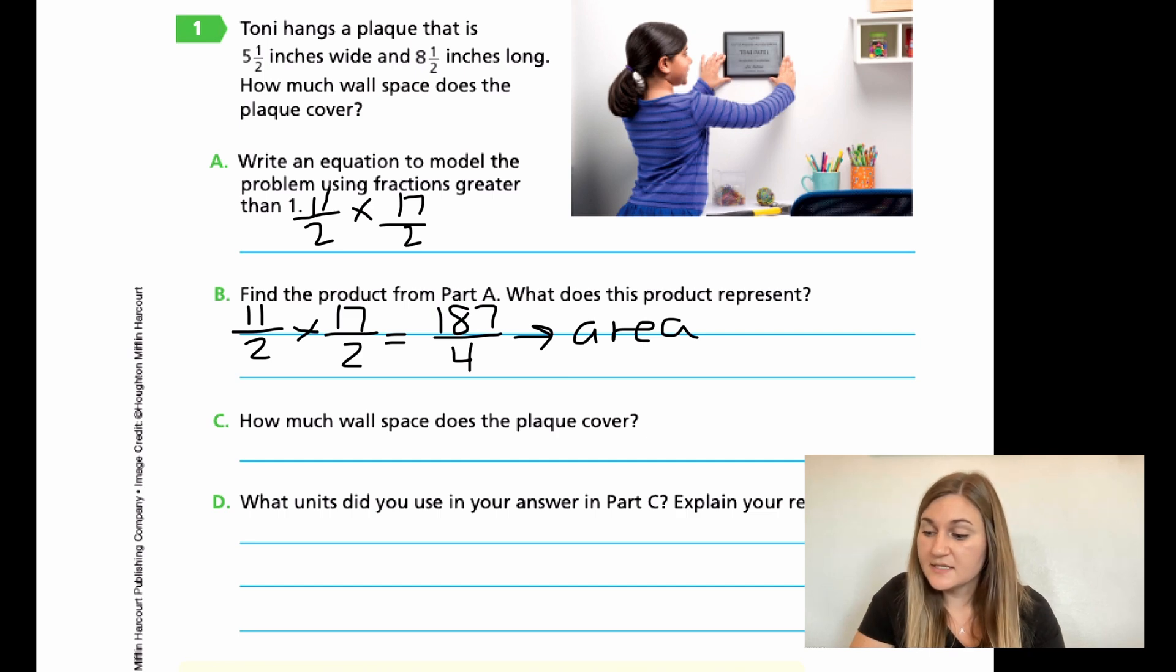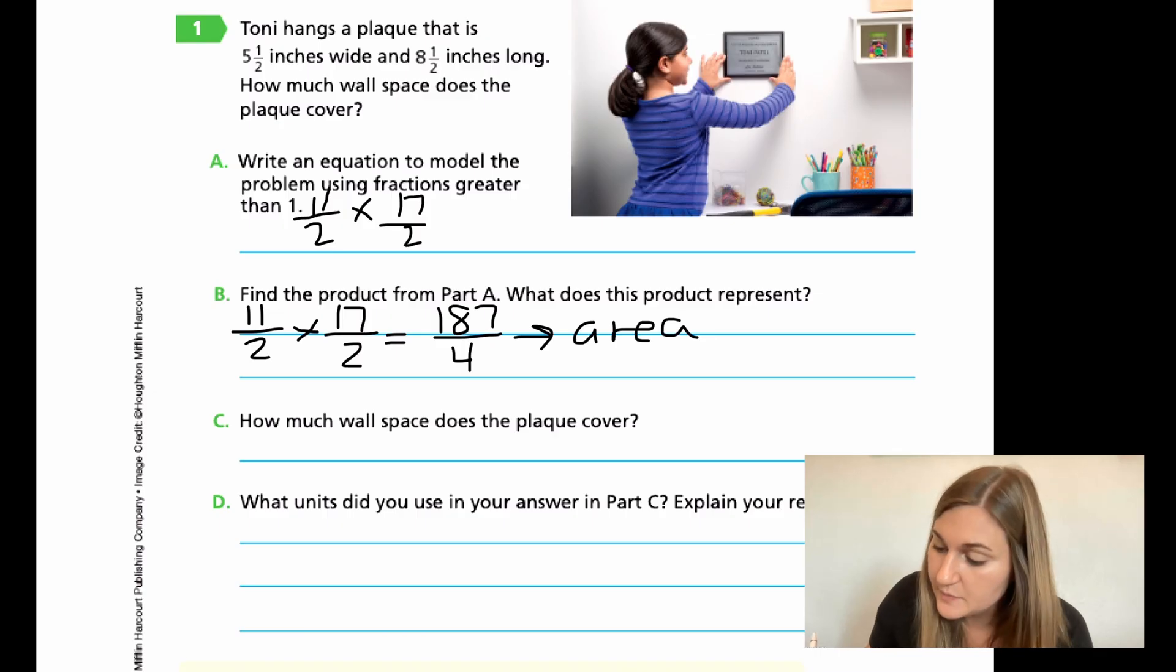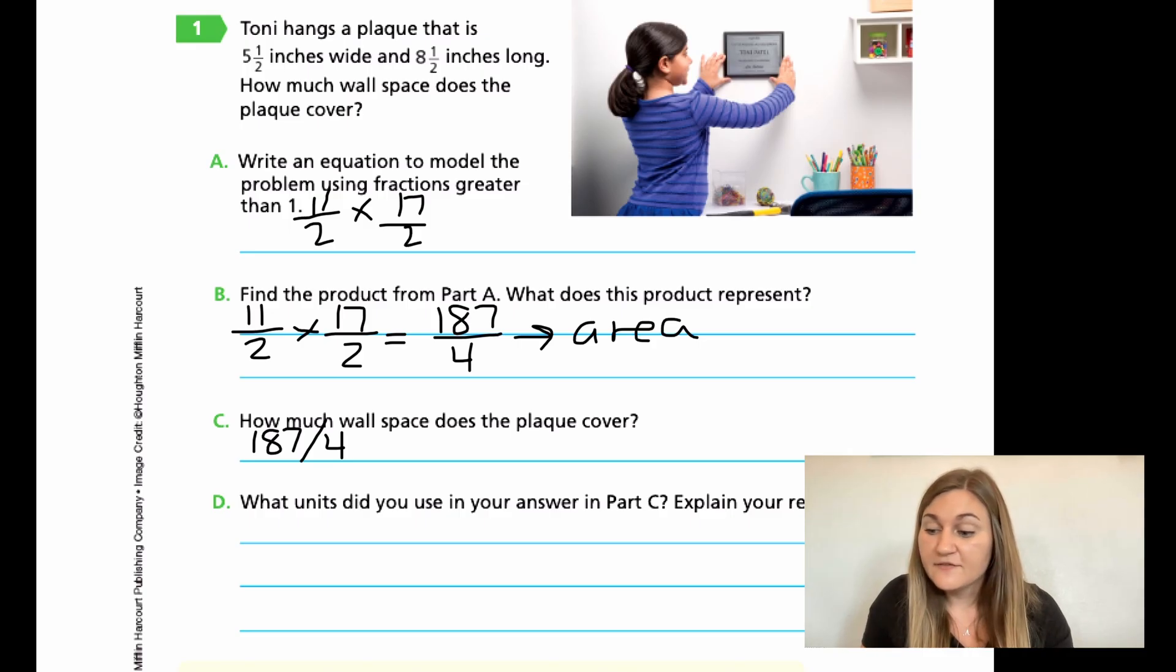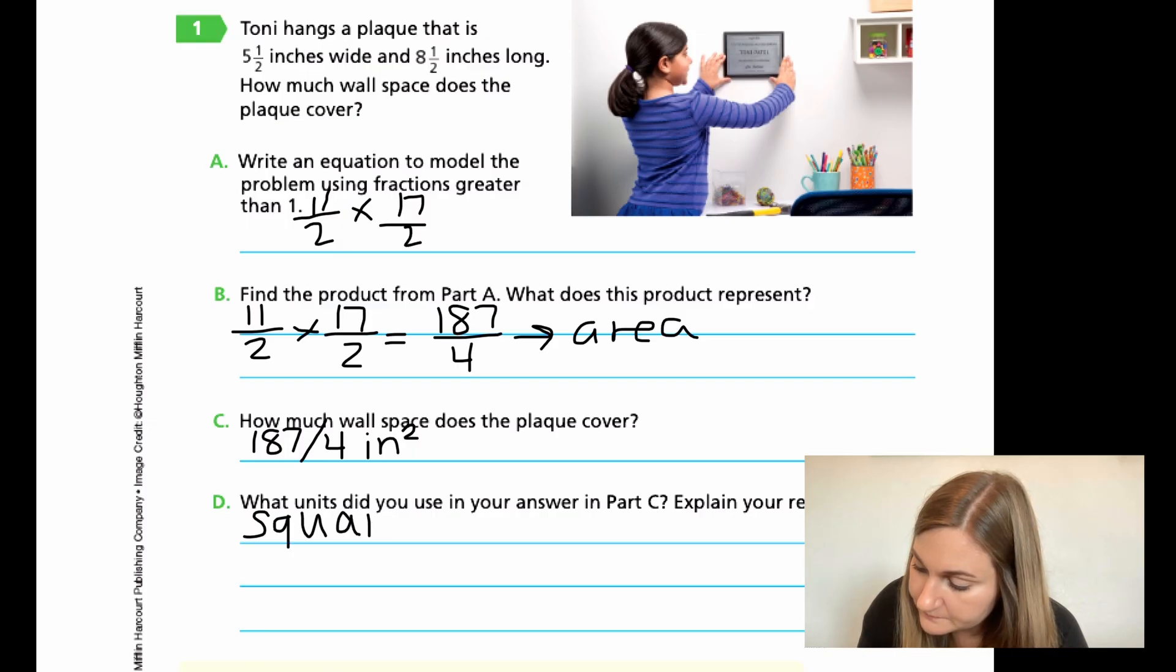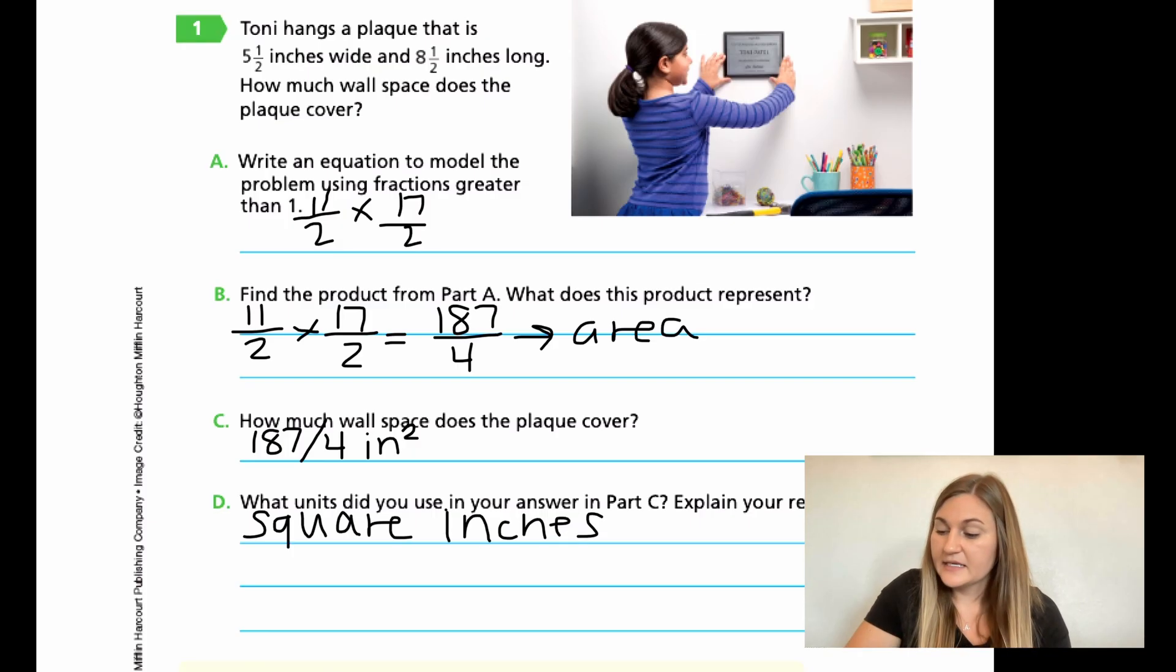For C, it says, how much wall space does the plaque cover? Well, if we're going to put it into units, this would be 187 over 4, and the units it gave me originally were inches. It said 5 1/2 inches by 8 1/2 inches. So if we're dealing with area, this is going to be inches squared, and that squared is because we're dealing with two parts of a multiplication. So if we have two parts, the exponent is going to be 2, and then you say 2 as squared. And then D, it says, what units did you use in your answer? So if I was writing this as not a symbol, but in words, I would write square inches. And explain my reasoning is what I just explained. So because they gave me that original inches as my measurement, and I'm taking two of them, and I'm doing it with area, because I'm multiplying two things together, it is going to be square inches.